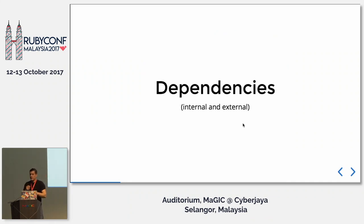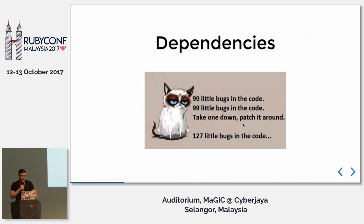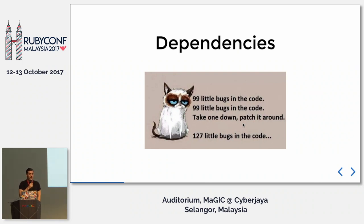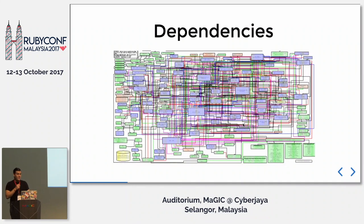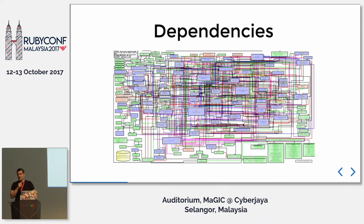Dependencies could be external — like your database, certain APIs that you consume, webhooks that you use, or certain technology you're using. But also it could be internal dependencies. As the application is growing, lots of modules that you're using inside are dependent on each other. And when you see this mass of dependencies and you're trying to fix something, make a new feature, or make certain adjustments, you're actually creating more problems. And by creating more problems, you end up in a mess. Honestly, I don't know how you can work on this — it will take you years to figure out what's going on.